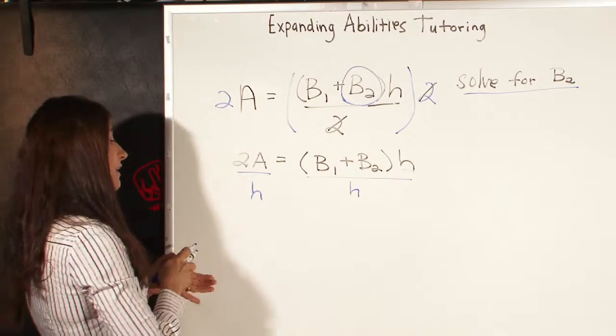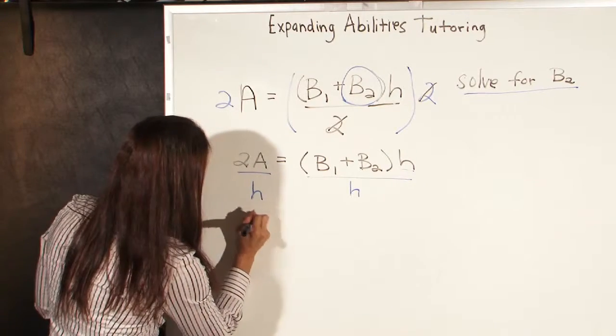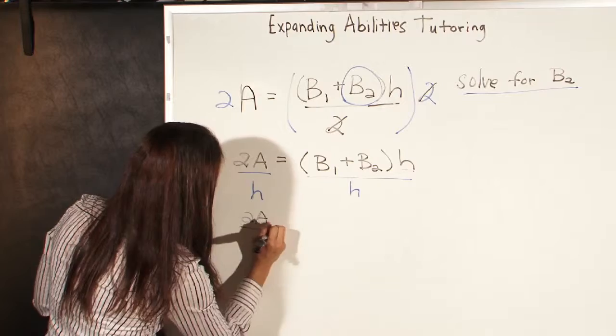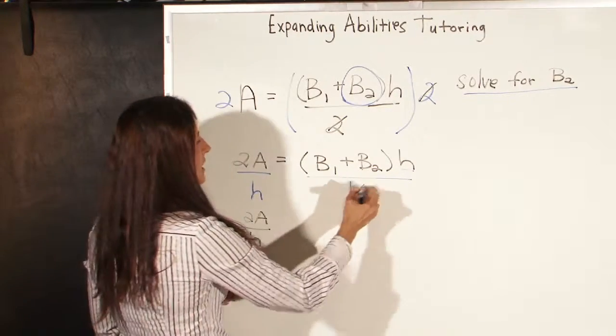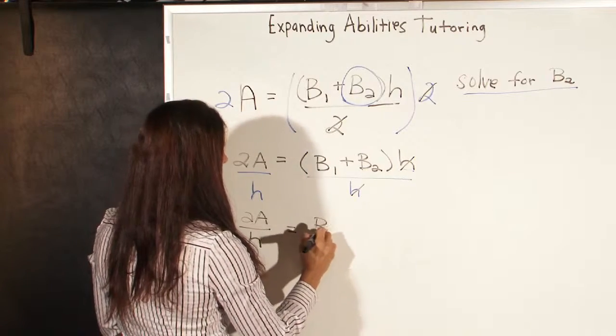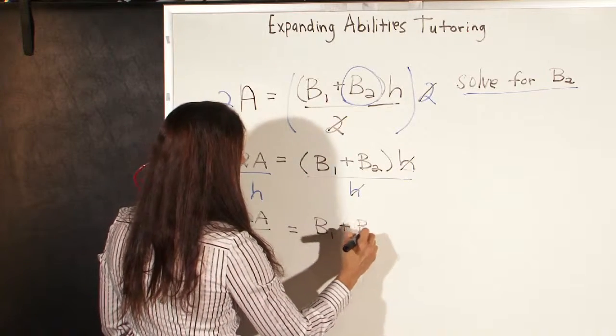So on the left-hand side, we're left with 2A over H. And on the right-hand side, the H's cancel, and we're left with B1 plus B2.